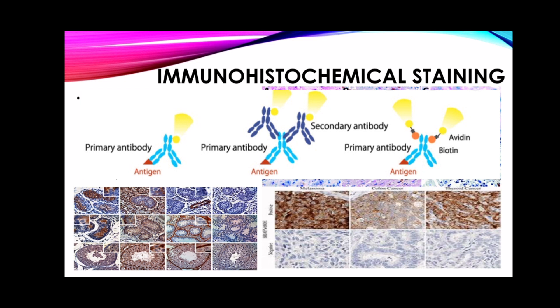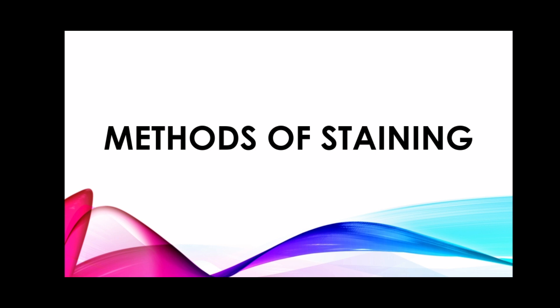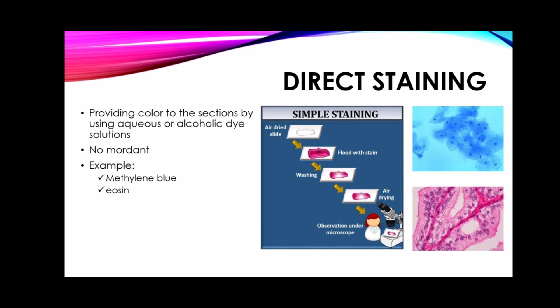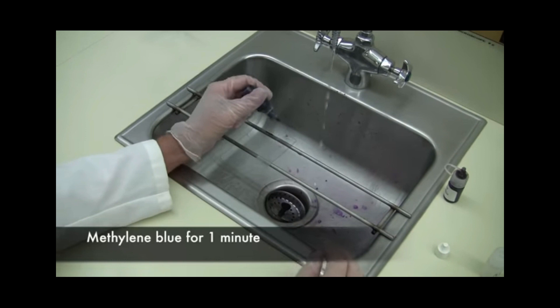There are also different methods of staining. One is direct staining — the process of giving color to sections by using aqueous or alcoholic dye solutions, such as methylene blue and eosin.